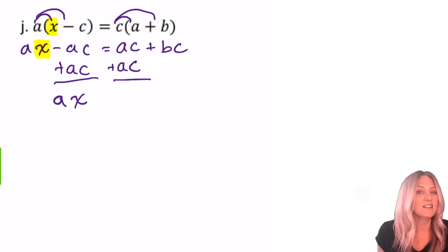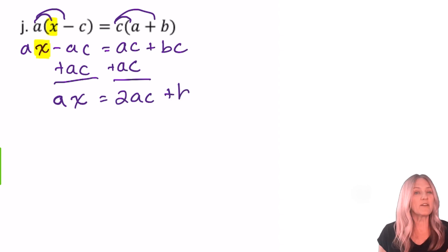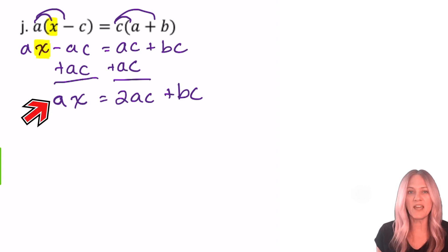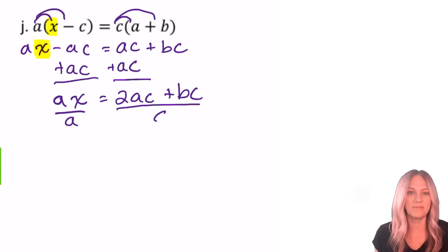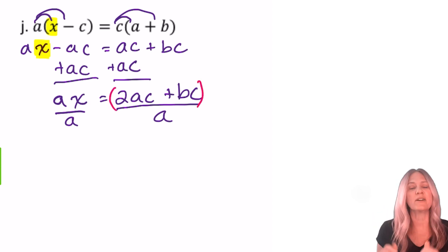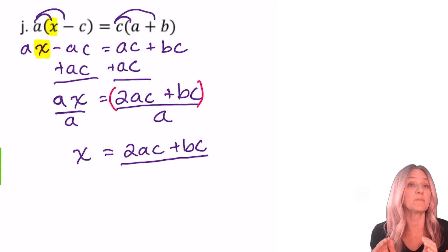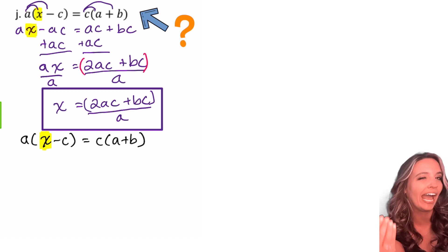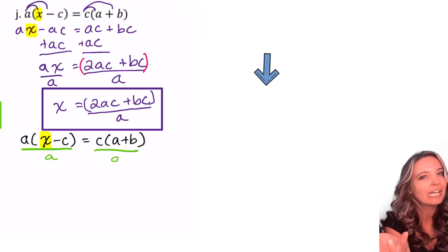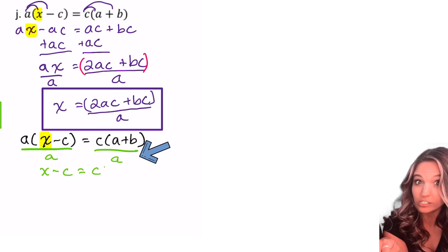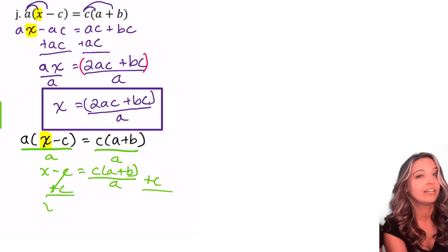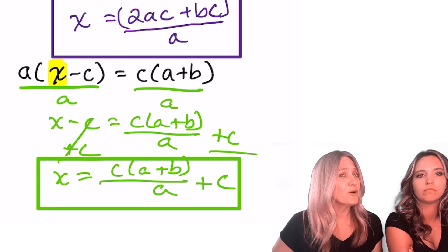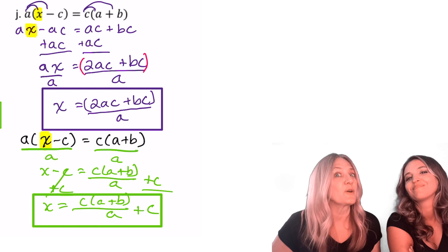Now ac plus ac — remember what to do? You get 2ac. So we're left with ax equals 2ac plus bc. Last step: undo that multiplication — division property of equality, divide by a. When we divide the entire side by a, hug out that numerator to emphasize that the sum must be performed before dividing. Alternatively, I could divide a off first, then add c to both sides — fewer steps! But can you prove those are equivalent equations?